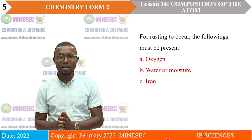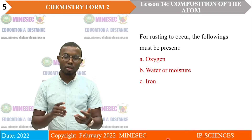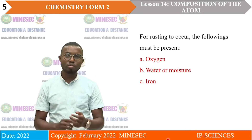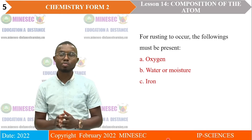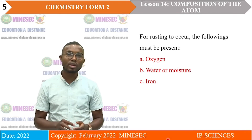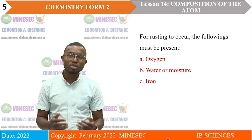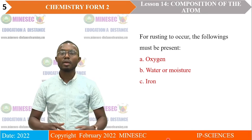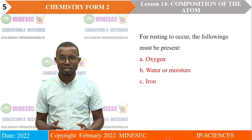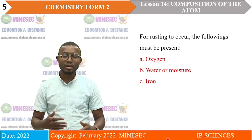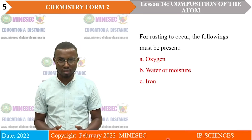For rusting to occur, iron must be present, oxygen must be present, and water or moisture must be present. We also said that the presence of impurities accelerates the rate of rusting.